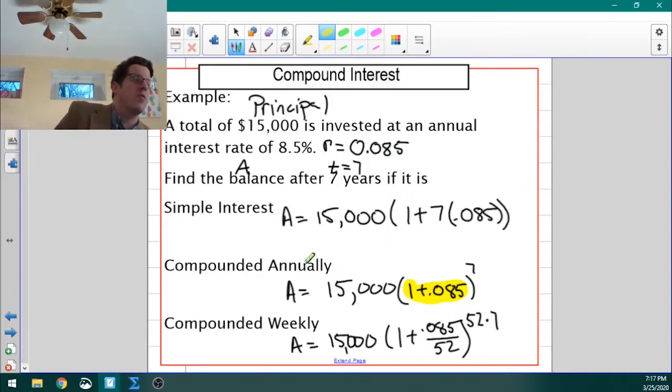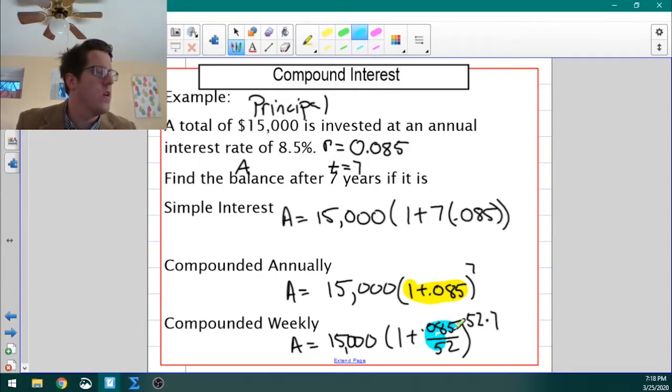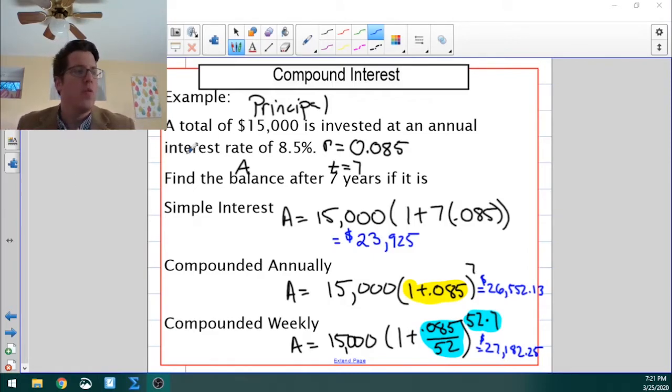For the weekly compounding, I want to make sure I explain this part right here. Interest rates are given as annual figures. If you get an 8.5% interest rate, that is for the year. If you're going to compound weekly, that's going to compound 52 times per year, which is why this is 52 times 7 up here in the exponent. But your annual rate is going to be split up into 52 equal parts. I'm going to pause the video for just a second, and we'll get these plugged in and figure out what this is actually worth.